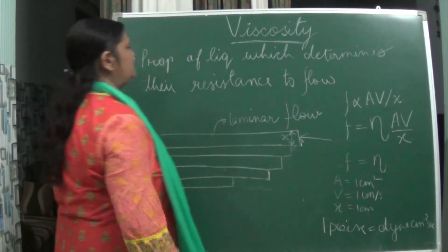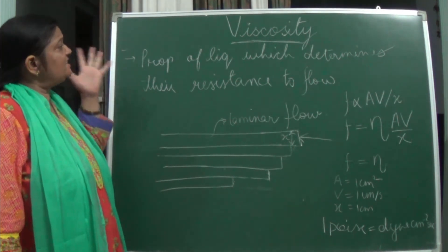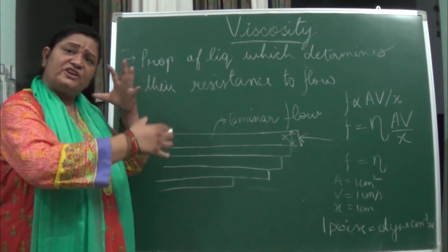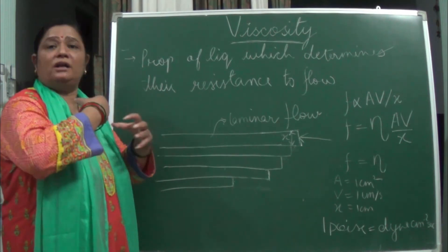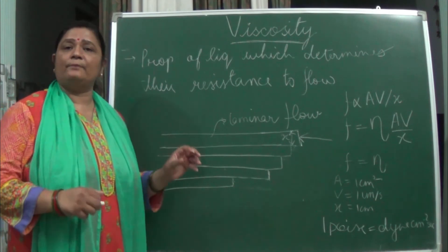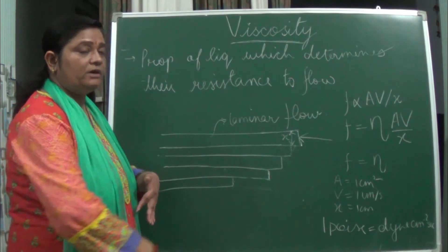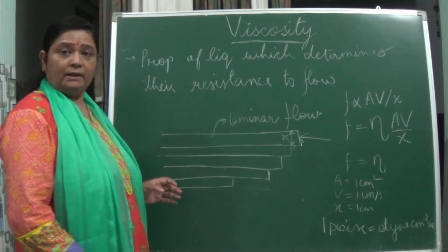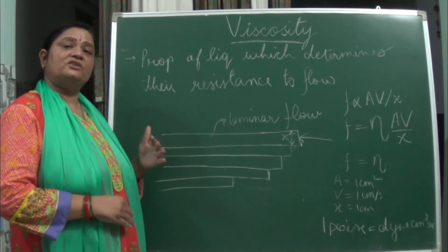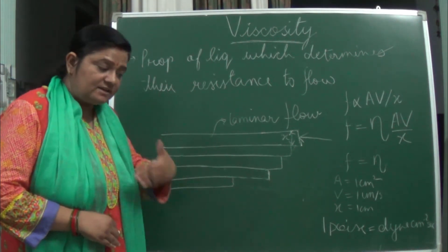What is viscosity? It is the property of the liquid which determines the resistance to flow. There is some frictional force which is not allowing it to flow freely. For example, take water and honey and spill them on the floor — water flows first, but honey stops. In case of water, the frictional force is less so resistance to flow is also less. But in honey, frictional force is more, so resistance to flow is more and it will not flow properly.